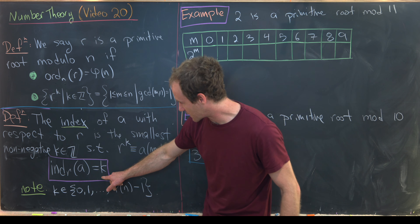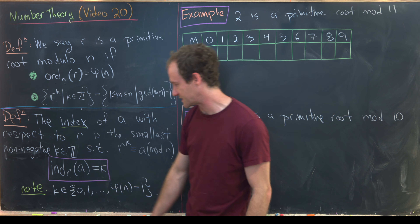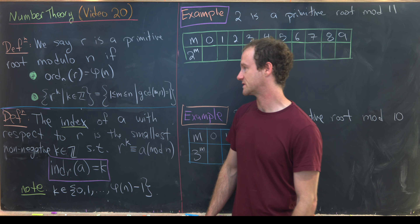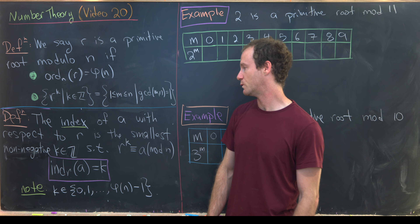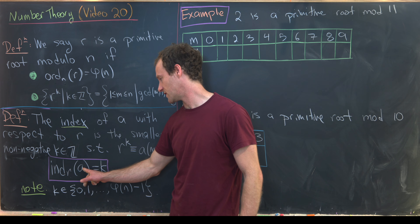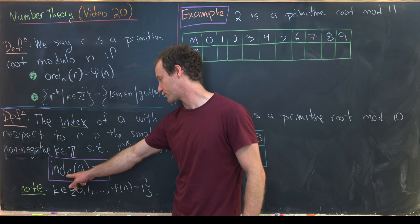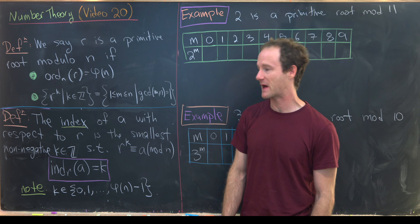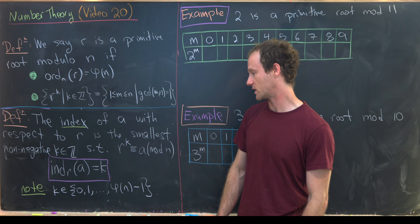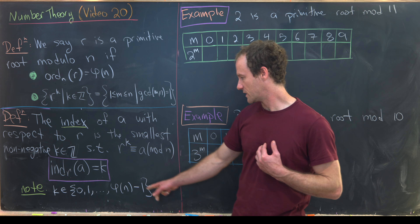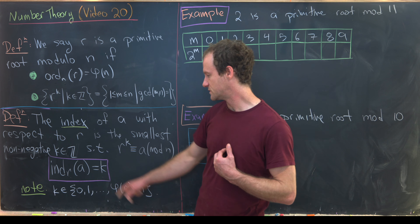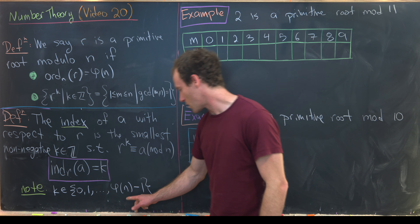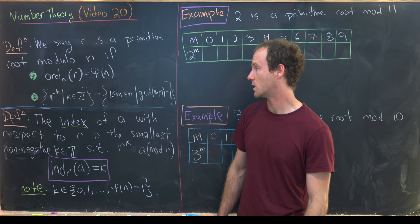We write this as ind_r(a) = k, read as 'the index of a with respect to r,' keeping in mind we're working mod n. Notice the values of k can only be between 0 and φ(n) minus 1.